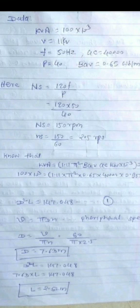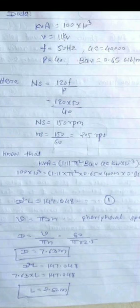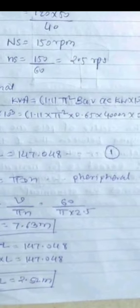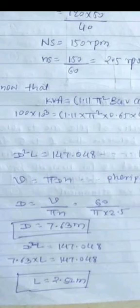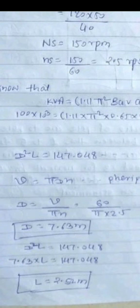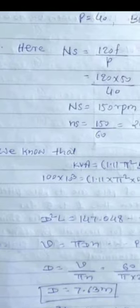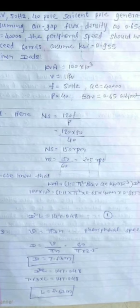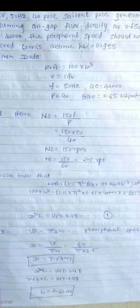Peripheral speed equals pi D n. From that, D equals peripheral speed divided by pi n. Just put the value. Peripheral speed is given as 60 divided by pi times 2.5, where 2.5 is our speed in RPS. Calculate that, we get D equals 7.63 meters. Now put this D value in equation number 1 to get the value of length.